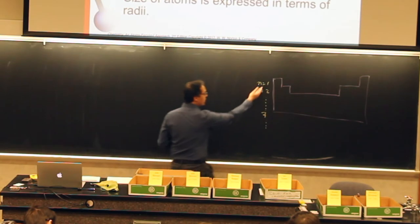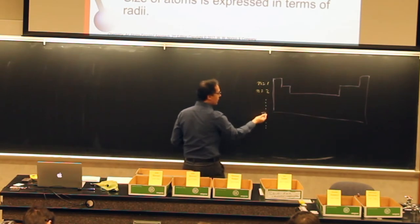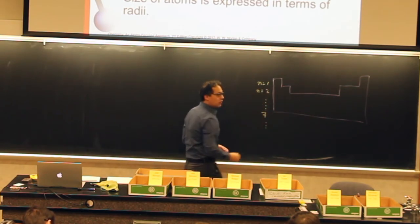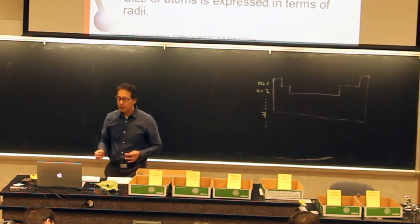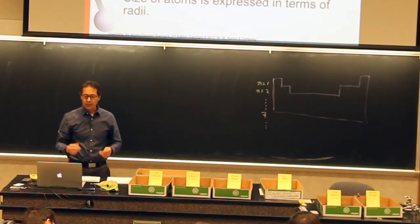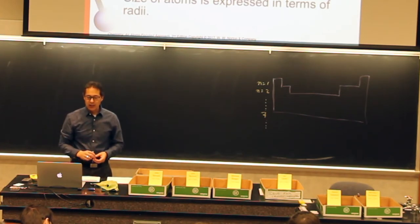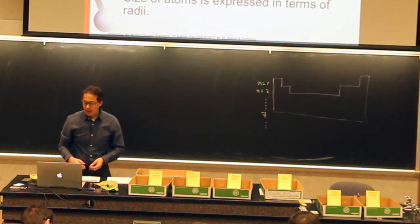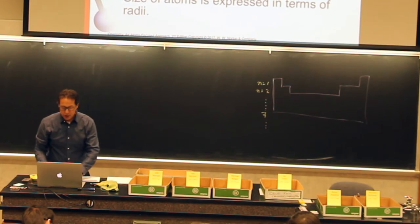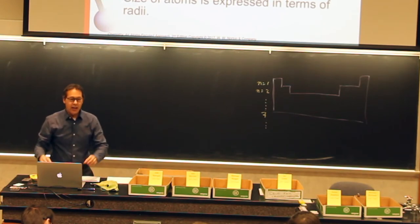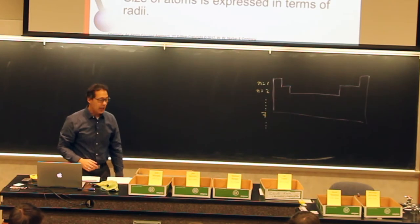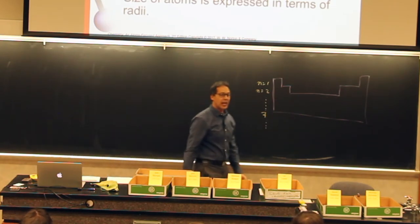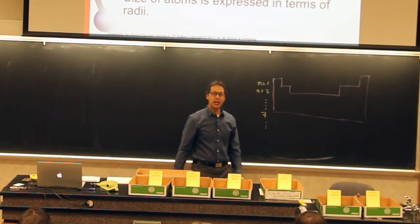As we go down the periodic table, our energy levels are getting greater, we're getting further away from the nucleus of the atom, and our atoms get bigger. So if we were to map out where our biggest atoms are on our periodic table, we're looking at atoms that get bigger as we go down.